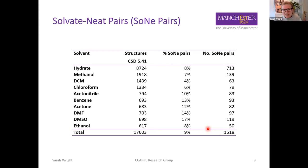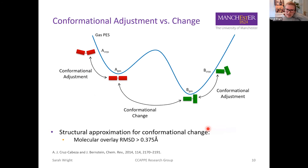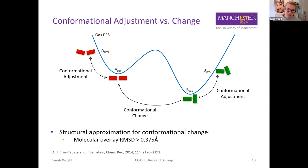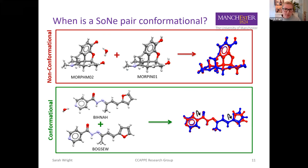This percentage can vary significantly between different solvate types; we tend to see lower percentages for polar protic and chlorinated solvents compared to non-polar solvents. Conformational change can be identified by obtaining a potential energy surface of the molecule. Aurora Cruz-Cabeza and Joel Bernstein derived a structural approximation for conformational change: if the RMSD of the molecular overlay of two molecules is greater than 0.375 Ångström, they are likely to be related by conformational change.